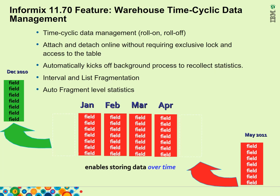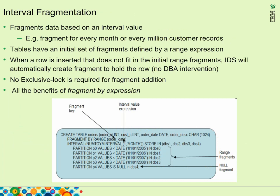An important part of managing data in a data warehouse is the ability to add or drop a fragment in an automated fashion. Most retailers have the need to store a certain number of intervals of data, usually by month, but it could be by week or perhaps by year. When the new interval of data comes in, the system should automatically add a new segment and release the oldest one to maintain a total number of intervals desired, like 24 or 36. 11.70 now provides this capability for time-cyclic data management.